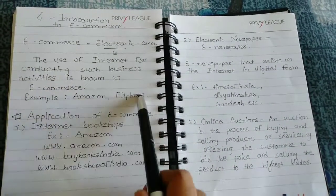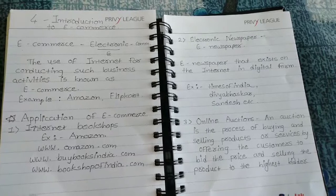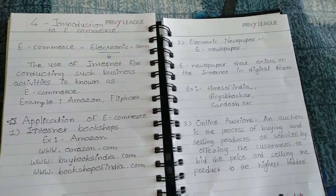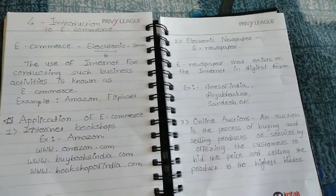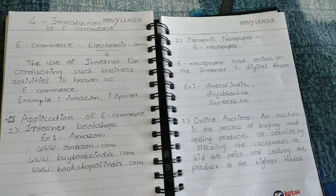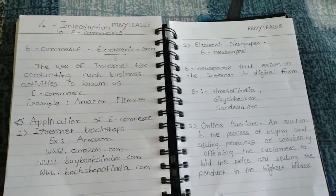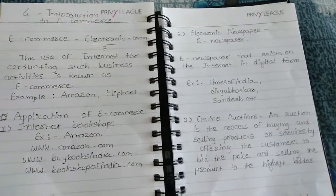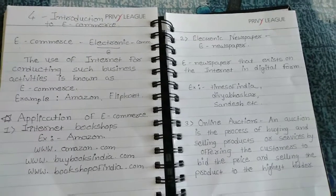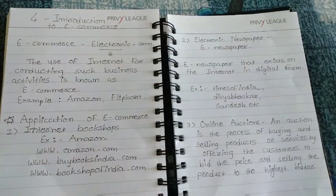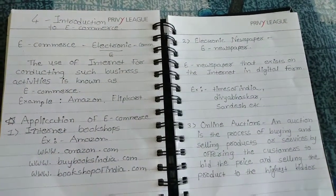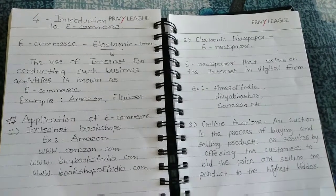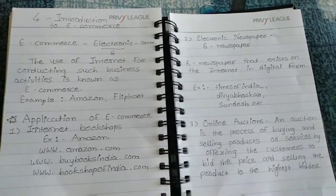For example, Amazon, Flipkart, Snapdeal, Myntra — all these websites are known as e-commerce websites that are used for online business. So online business means e-commerce. Online business activity is known as e-commerce.